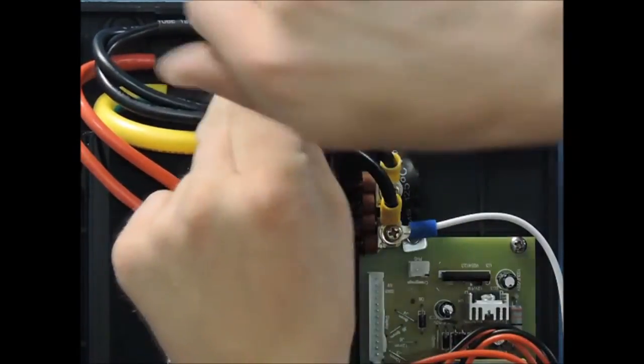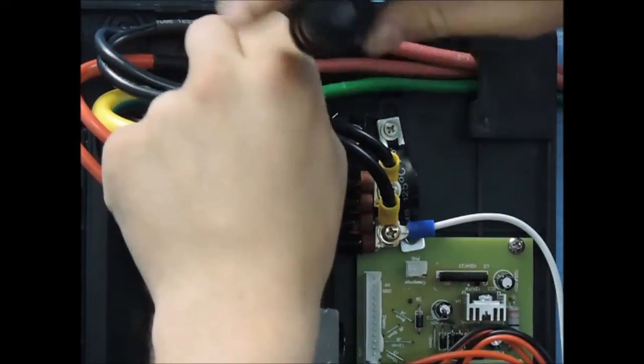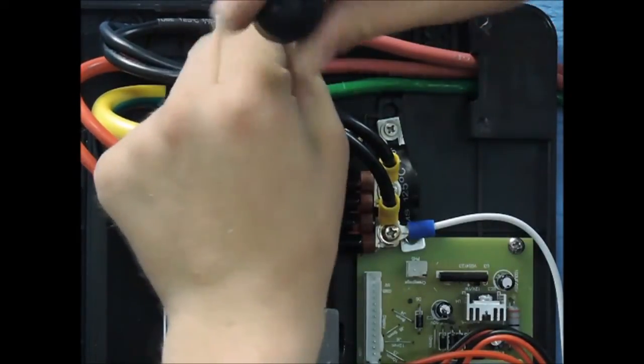Please be sure that all connections at the terminal block are secure as well as the breaker panel. And make sure to reinstall the wire retainer before putting back on the front cover.